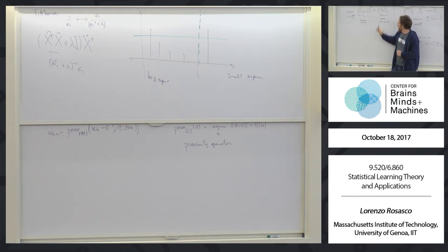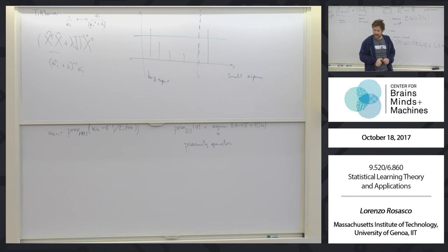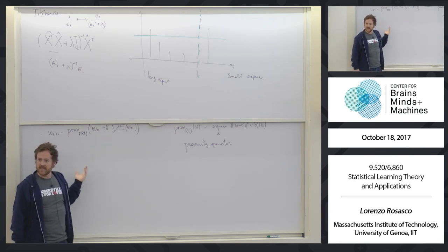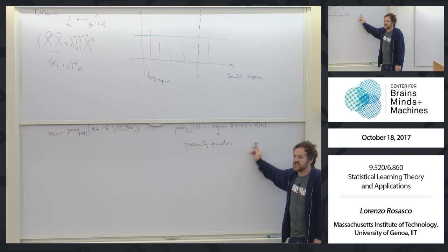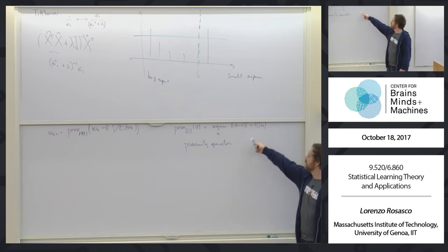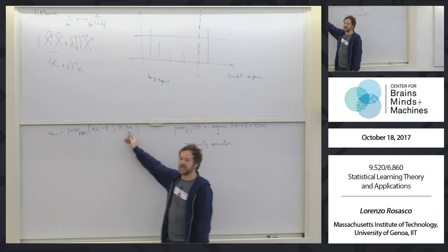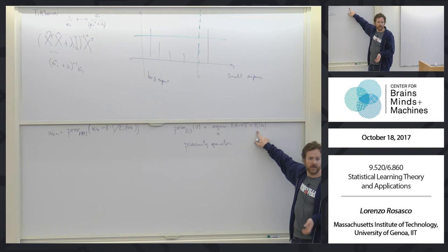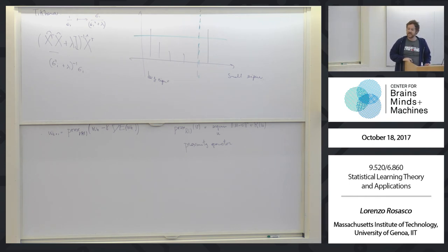This looks almost like the original problem, except for one key difference: in the proximal problem, you don't have X. The original problem has an X matrix involved; the proximal operator does not. This makes life much easier. This approach only makes sense if there are choices of R for which the proximal problem is particularly simple to solve — ideally in closed form. It turns out that for L1, and in fact many norms with a sparsity flavor, this computation can be done in relatively simple terms.